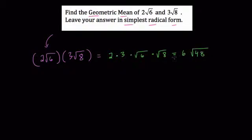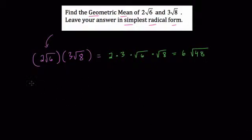Now 2 times 3 is 6, and the square root of 6 times the square root of 8 is the same thing as the square root of 48. That's the basic property of square roots — we can multiply these two square roots like we do numbers. Now we want to reduce this, but what's interesting is we're taking the geometric mean of this product. Since there were two numbers, we're going to take the square root of this product.